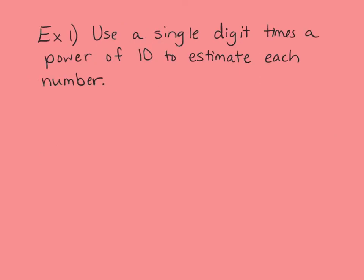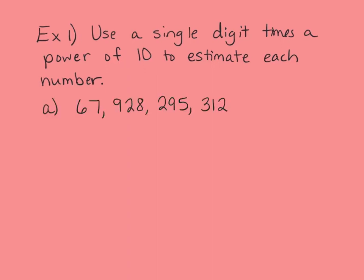For example 1, we're going to use a single digit times the power of 10 to estimate each number. The first problem is 67,928,295,312. This is a very large number, so we would typically just estimate it. We start by taking the digit in the largest place value, which is 6, and look at the digit to the right — 7 — to decide if it rounds up or stays the same. Since 7 is at least 5, it rounds up to 7, giving us 70 billion.